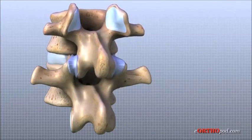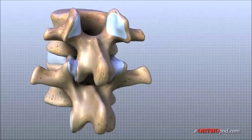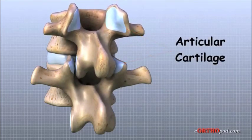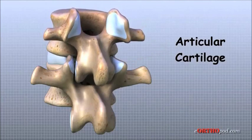The surfaces of the facet joints are covered by articular cartilage. Articular cartilage is a smooth, rubbery material that covers the ends of most joints. It allows the bone ends to move against each other smoothly without friction.